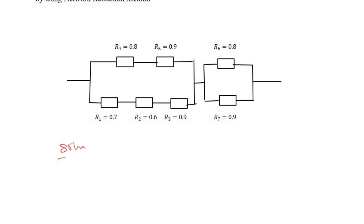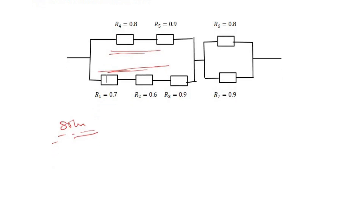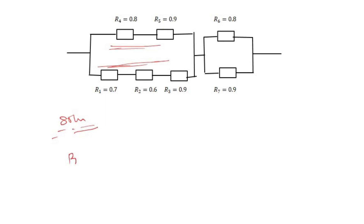Diving into the solution: as we can see, units 4 and 5 are connected in series, and units 1, 2, and 3 are connected in series. We start by reducing the system. Let's call R_A the reliability of units 4 and 5: R_A = R4 × R5 = 0.8 × 0.9 = 0.72.